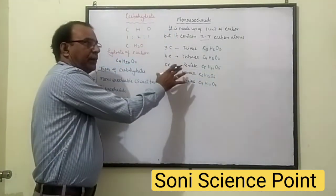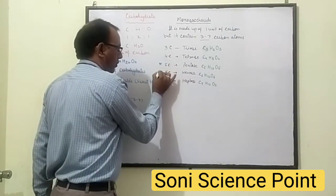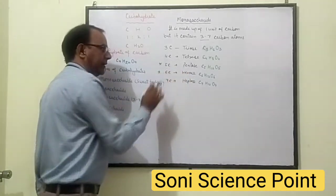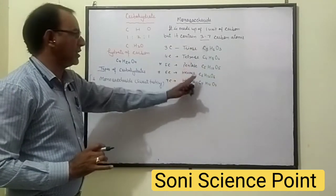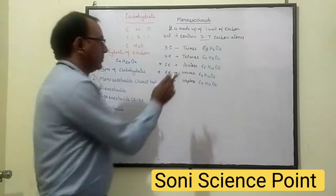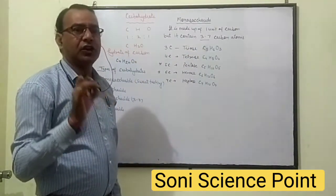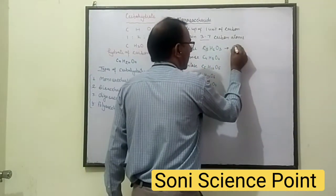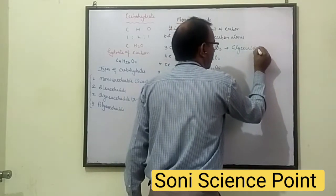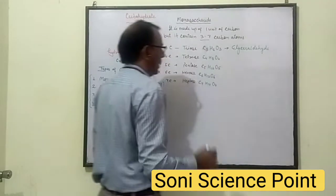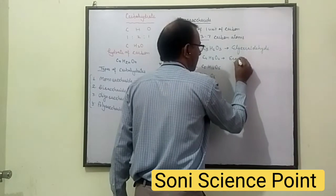These are the different types of Monosaccharides. In this chapter, we will focus on only two: Pentose sugar and Hexose sugar, because these are very important. Taking one example of each type — a Carbohydrate with three Carbon molecules is called Glyceraldehyde, and one with four Carbon molecules is called Erythrose.